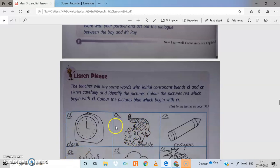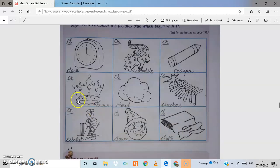And what is this? This is crocodile. CR, CR blend, crocodile. This is CR blend. Same, what is this? This is crayon, CR blend. Next, crown, CR blend.